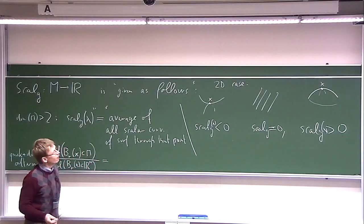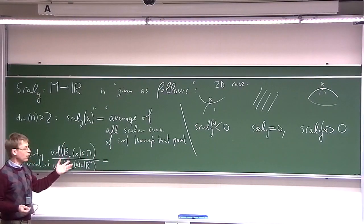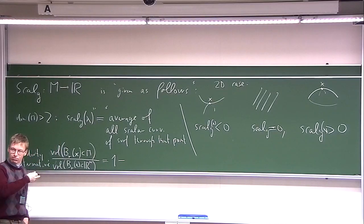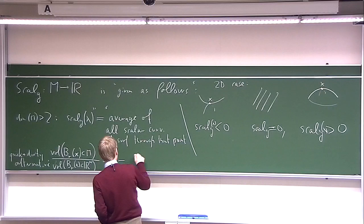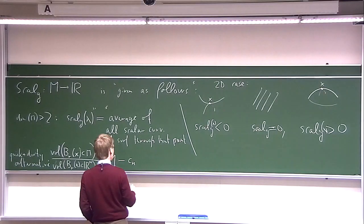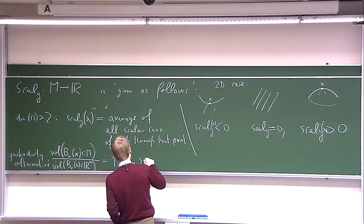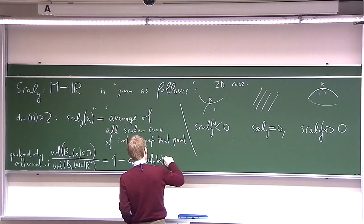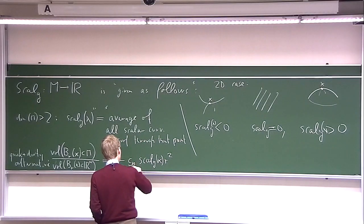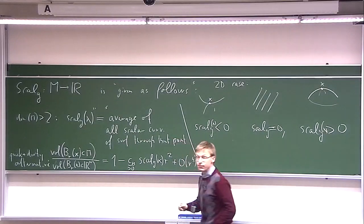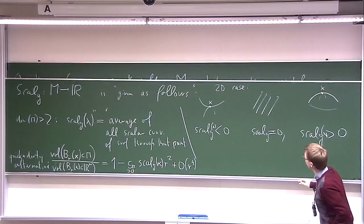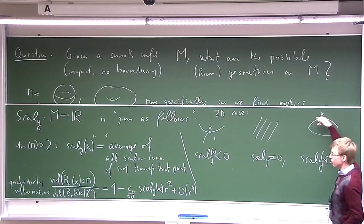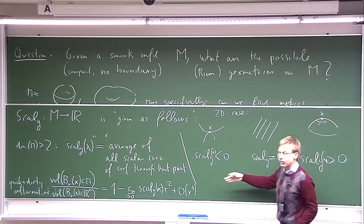If we zoom in to small scales, the two volumes will be pretty much the same, but not quite. If you do a Taylor expansion, there are non-trivial further terms. The next term is quadratic, and it turns out this is exactly given, up to a dimension-dependent non-zero constant c_n, by the scalar curvature at the point x. In the positively curved case, circles of radius r are shorter than in Euclidean space, so the ball is smaller than expected.